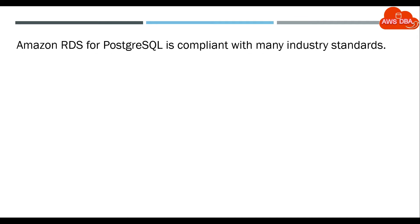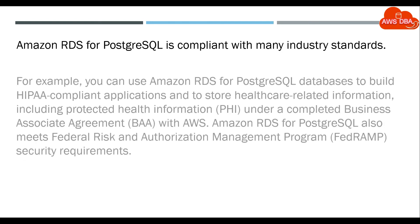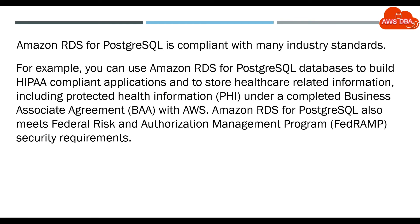Amazon RDS for PostgreSQL is compliant with many industry standards. For example, you can use Amazon RDS for PostgreSQL databases to build HIPAA-compliant applications and to store healthcare-related information, including Protected Health Information, PHI, under a Completed Business Associate Agreement, BAA, with AWS.